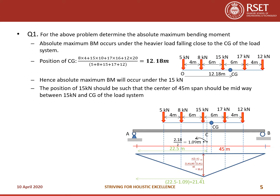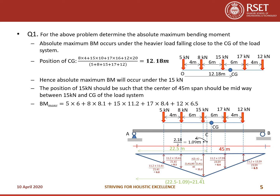The ordinate at X is given by X × (L − X) / L: 21.41 × (45 − 21.41) / 45 = 11.2. Using similar triangles with the known altitude and length 21.41, the other ordinates are 6, 8.1, 8.4, and 6.5. Multiplying each ordinate by its corresponding load: 5×6 + 8×8.1 + 15×11.2 + 17×8.4 + 12×6.4 = 483.6 kNm.